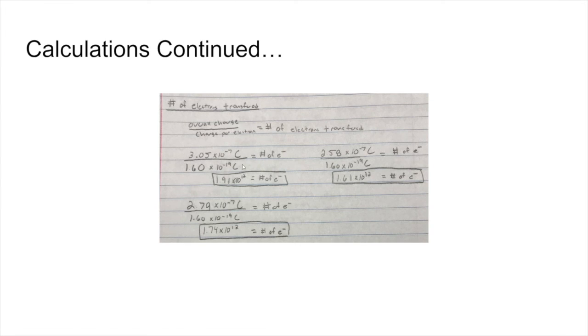The charge was then divided by the charge of one electron in order to get the total number of electrons transferred, or at least an approximate number.